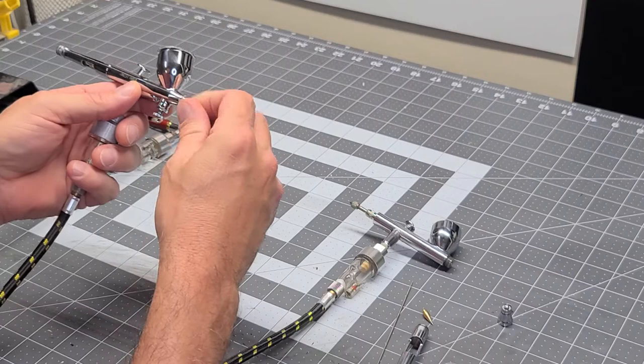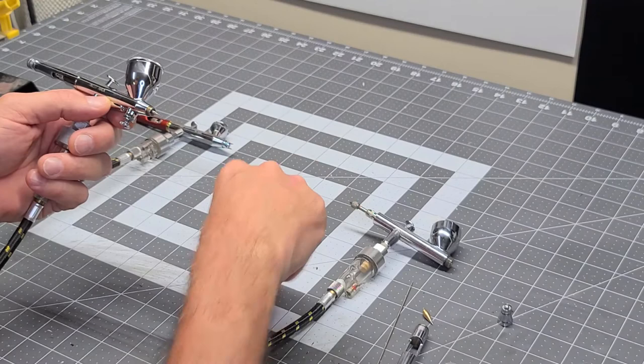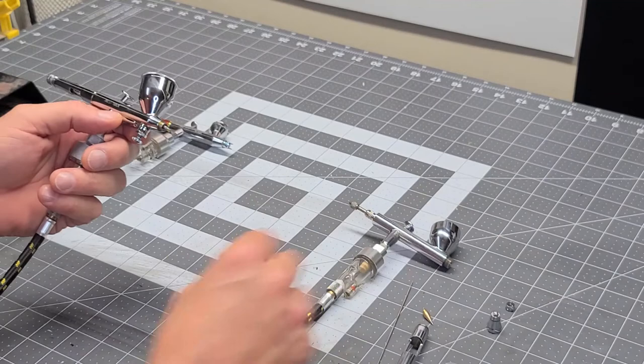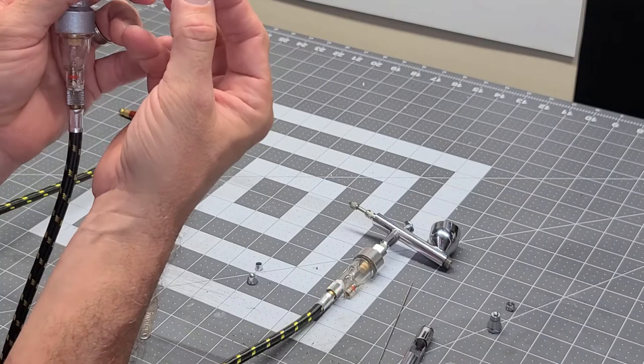The next one, same thing, needle cap. With this one here, it has a slightly different, smaller cap or nozzle cap than the Eclipse, because it also has a very small nozzle. You can see the difference in the wrenches. Eclipse wrench and HPCH wrench.